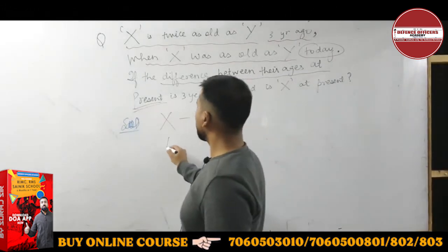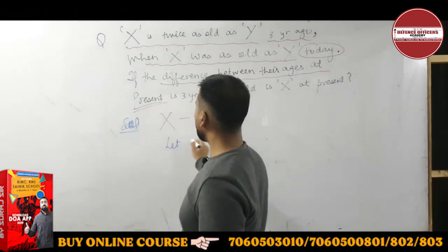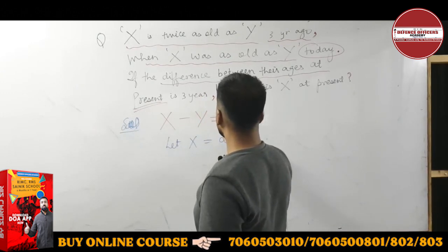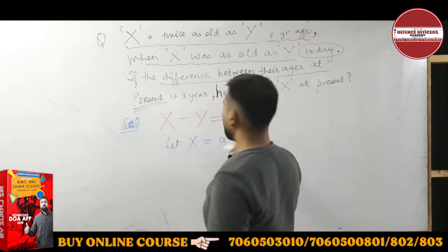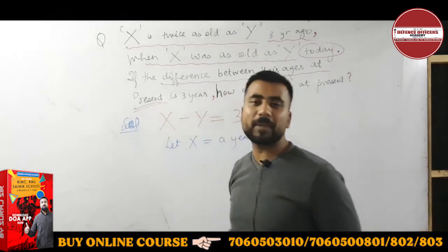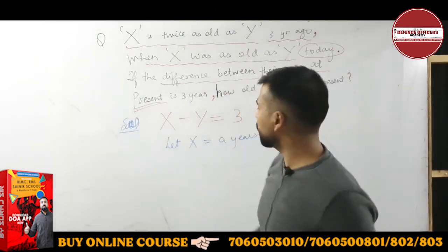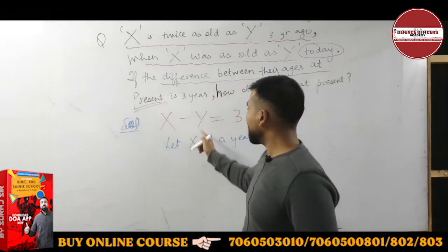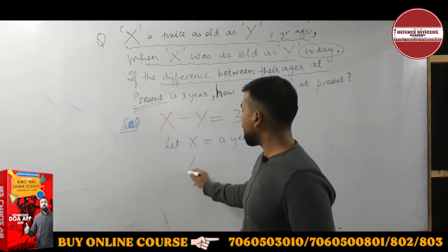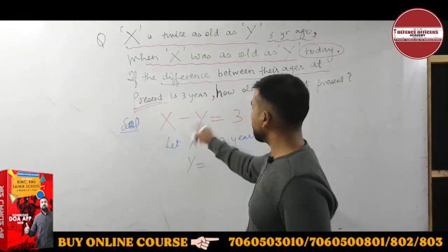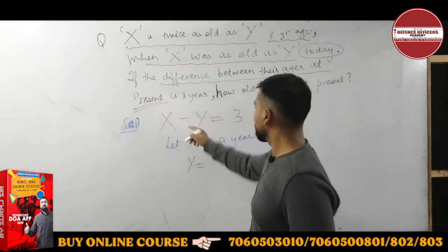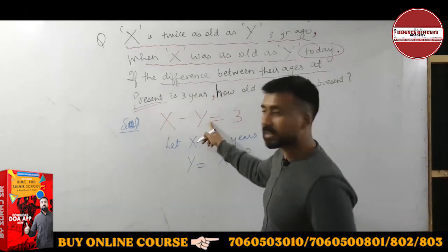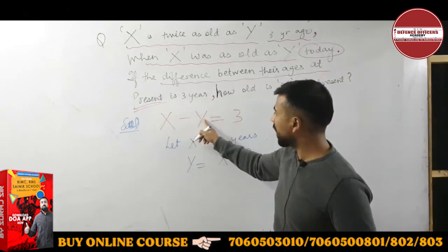Let X's age equal 'a' years. We use small 'a' because capital X is already used. Then Y's age will be X minus 3, that is, a minus 3, from the present age difference condition.